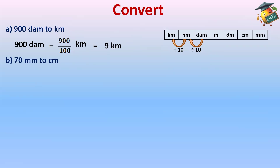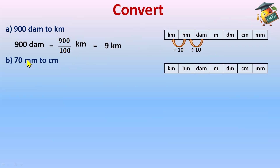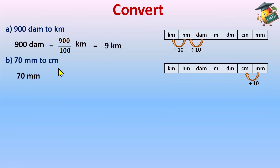70 millimeter to centimeter. Let's make a chart again. We are converting from millimeter to centimeter — going one step, moving backward from right to left, so divide by 10. 70 millimeters ÷ 10 = 7 centimeters.